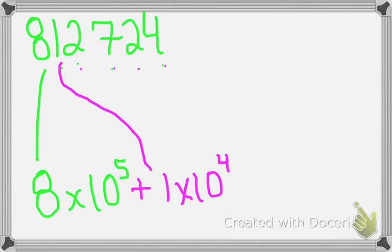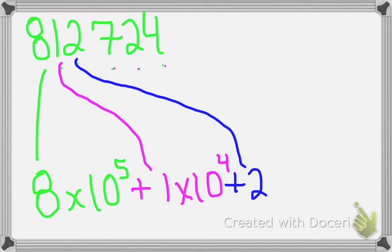So now we take our third number, which is 2, and multiply it by 10 to the power of 3, because there are 3 numbers after 2 in our original number.